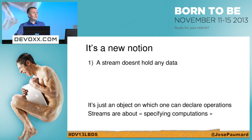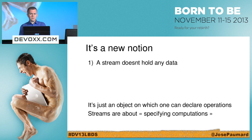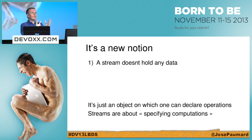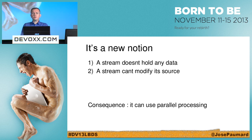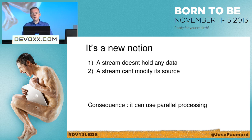First, the stream doesn't hold any data — it makes it a very light object. Even to handle several millions of objects, I can declare operations on it. Second, a stream cannot modify its source — it's a contract. If you do that you might run into trouble. The consequence is that I will be able to use parallel processing easily, at least as a user, probably not as an API writer.